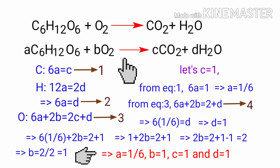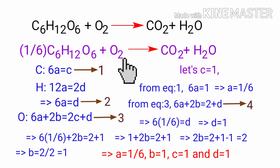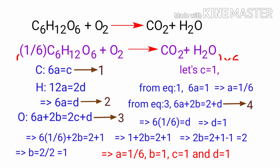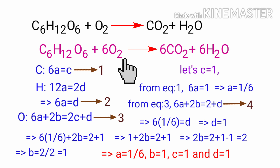Now apply the A, B, C, D values into the equation. We get: (1/6)·C6H12O6 + O2 gives us CO2 + H2O. Multiply the entire equation by 6 to get whole numbers: C6H12O6 + 6O2 gives us 6CO2 + 6H2O. The equation is now balanced.